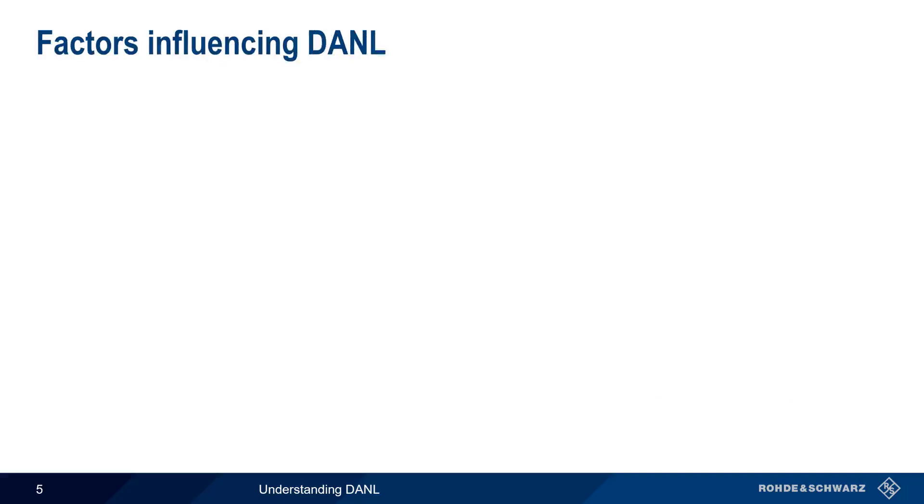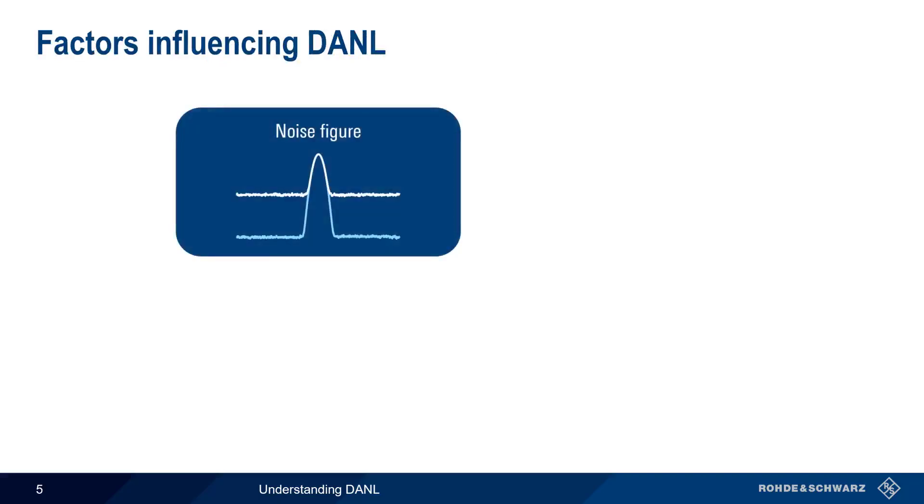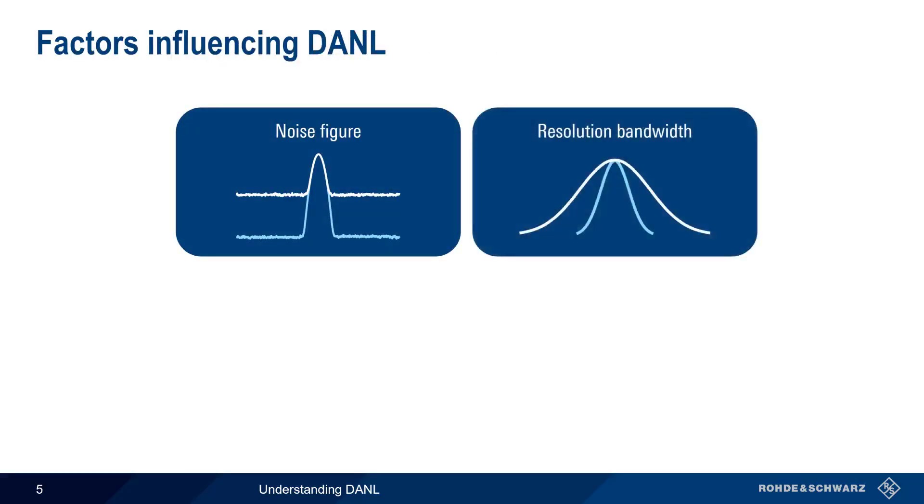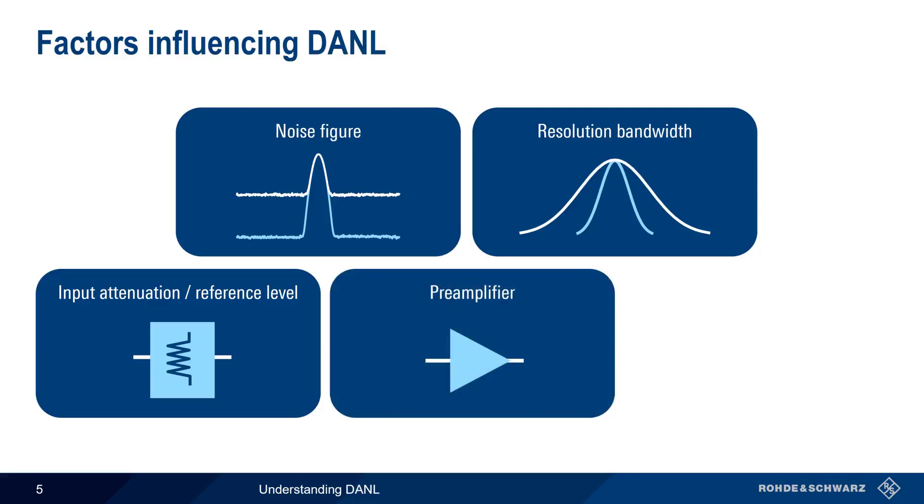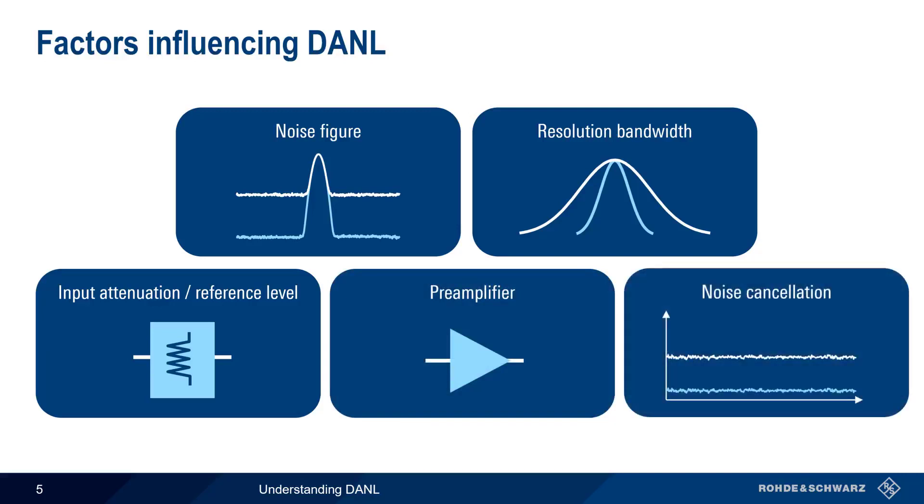DANL is a function of several factors, including the analyzer's inherent noise figure, the selected resolution bandwidth, input attenuation and reference level, use of a preamplifier, and noise cancellation. In the remainder of this presentation, we'll cover each of these topics in more detail and explain how each affects an analyzer's DANL.